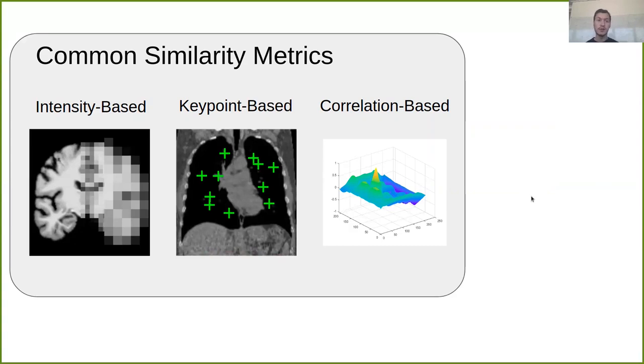An alternative is keypoint-based image registration, where we look at keypoints or points of interest in the images, and we are trying to find the matching between them. But this brings us immediately to the question of what are good keypoints and what is a good matching for them. And often this is done by hand annotation, which takes a lot of time. And this is not really feasible for many application areas.